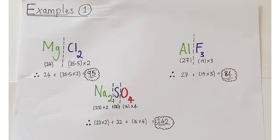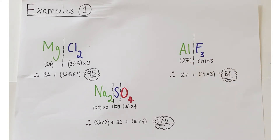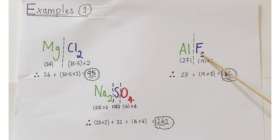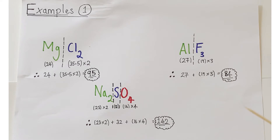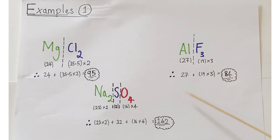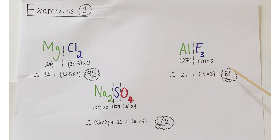Example number two: aluminium fluoride. Aluminium is 27. Look up fluorine: 19. But fluorine has the subscript 3, so there are three fluorine atoms present — that's 19 multiplied by 3. Bringing that together: 27 + (19 × 3) = 84. That's the relative formula mass for aluminium fluoride.